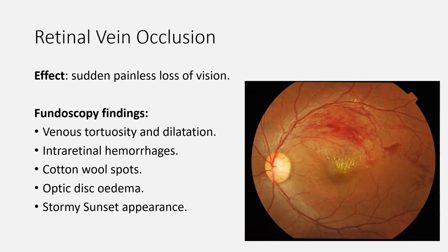Now let's move to retinal vein occlusion. Obstruction of the retinal venous system by thrombus causes increased venous pressure, which can cause venous tortuosity, intraretinal hemorrhage, and edema in the affected region of the retina. The presentation is sudden painless loss of vision. Fundoscopy findings include venous tortuosity and dilatation, intraretinal hemorrhages, cotton wool spots, optic disc edema, and stormy sunset appearance. Patients should be referred to an ophthalmologist within 24 hours.